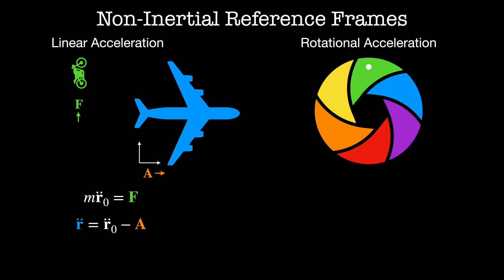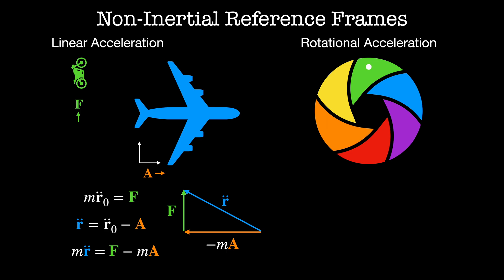If we want to see what the motorcycle is doing from the point of view of a passenger in the airplane, we look at how a point in the airplane frame accelerates relative to the rest frame. In the airplane frame, the motorcycle appears to be accelerating at r0 double dot minus the acceleration of the airplane a. The effective force on the motorcycle is the true force f plus an inertial force given by minus m times the acceleration of the reference frame a.